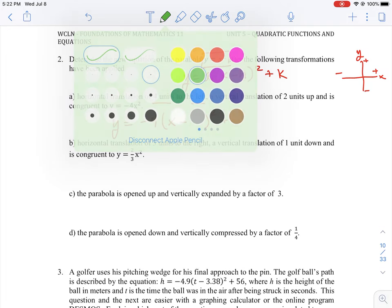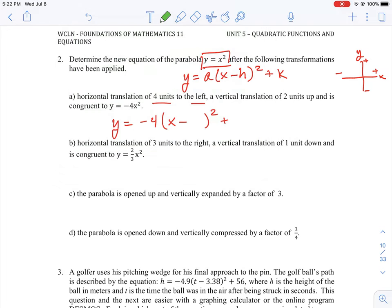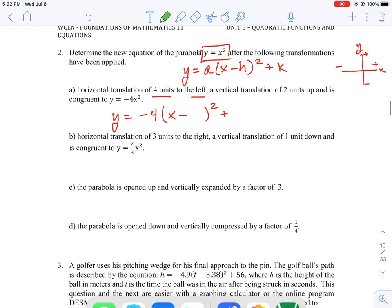So let me just do this in a different color so it shows up. If we're going to go four units to the left, that means we're going to the negative side of the x-axis. So that means we are going to actually have to put in a negative 4 as our value here, and two units up. So two units up is we're going to the positive direction in the y-axis, so we're just going to put in a number 2 here.